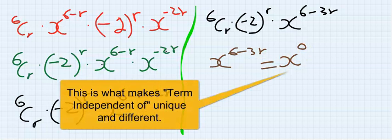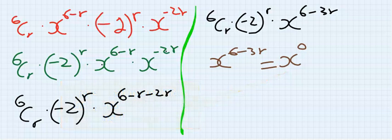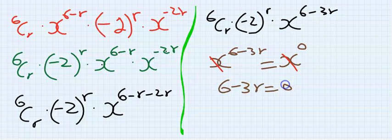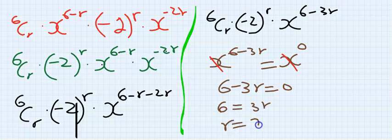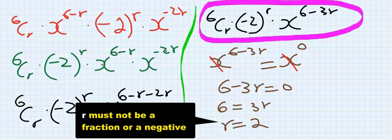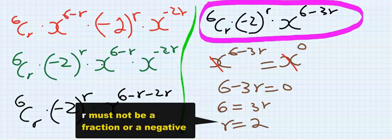This must be applied when you have term independent of x. This cancels and you're going to be left with 6 minus 3r equals 0. 6 equals 3r, and you see that r equals 2. Now substitute r into the last expression before you equate this to zero.